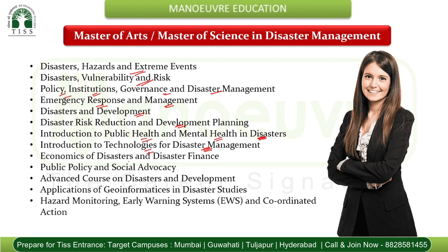The syllabus also covers: economics of disaster and disaster finance, public policy and social advocacy, advanced courses on disasters and development, applications of geo-informatics and disaster studies, hazard monitoring, early warning systems (EWS), and coordinated action. So all these concepts form part of your syllabus. The syllabus is quite well-designed — it provides students with a comprehensive understanding of disaster management, risk reduction, and humanitarian assistance.